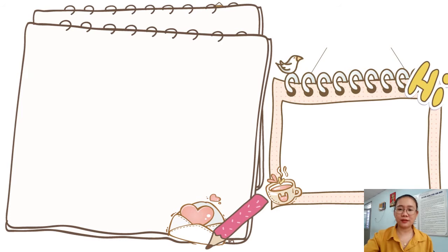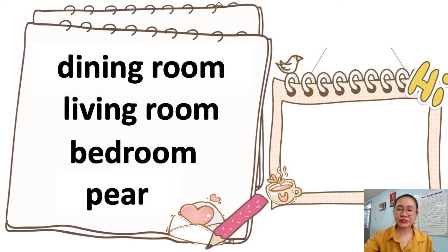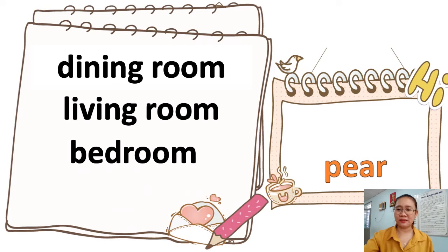The next one: dining room, living room, bedroom, and pear. Which one is different? Yes, absolutely — it's pear, because pear is a fruit, but dining room, living room, and bedroom are rooms in the house. Good job!